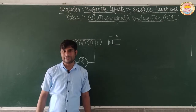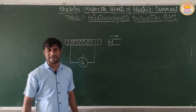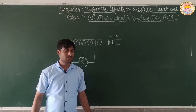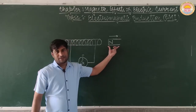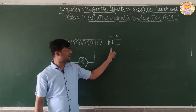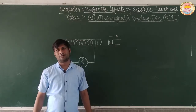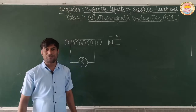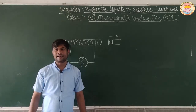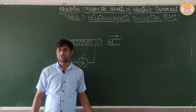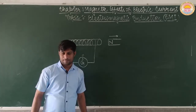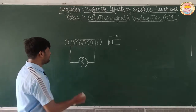To understand electromagnetic induction better, we can also perform a second activity in which the magnet is replaced by a current-carrying coil. We will remove this magnet and use a current-carrying coil to see how current is induced in another coil. Let us see.